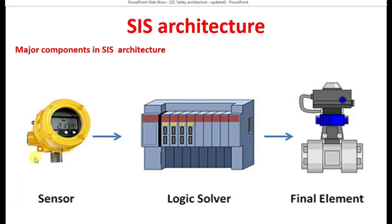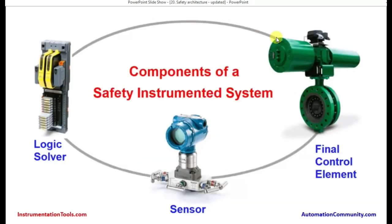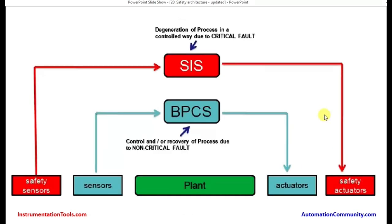As explained, the sensor is there going to the logic solver — the process signal goes to the final element to take an action to shut off the process. This is also depicted in a different way: a sensor gives a signal to the controller, which is the logic solver, and the output from the controller goes to the valve — in this case, a butterfly valve.